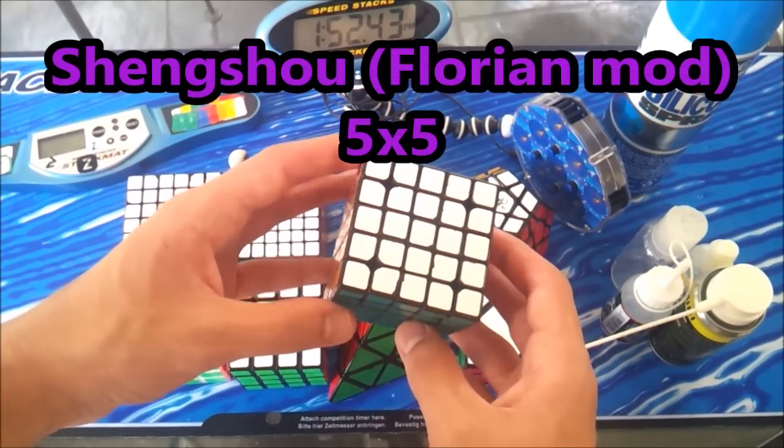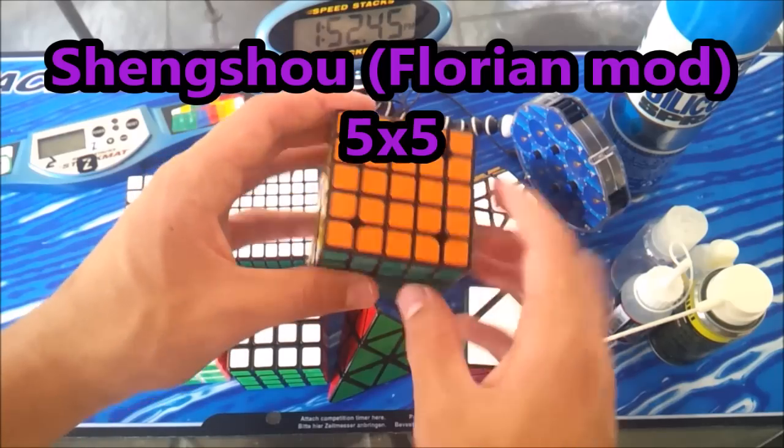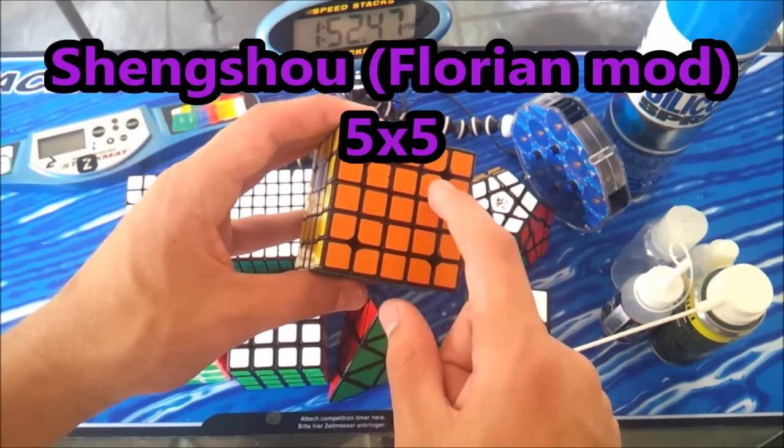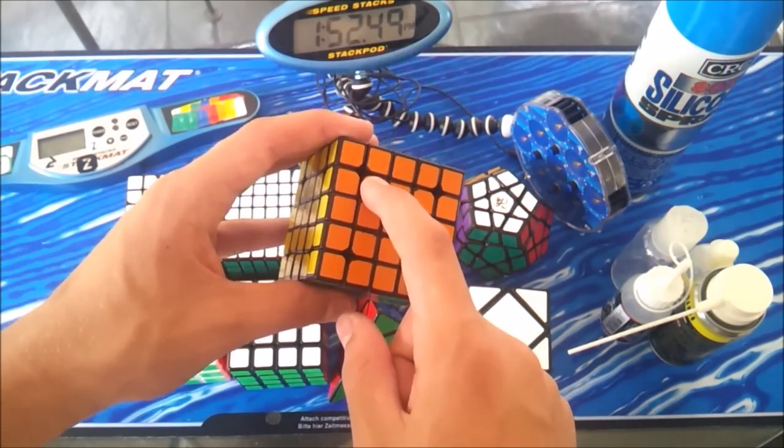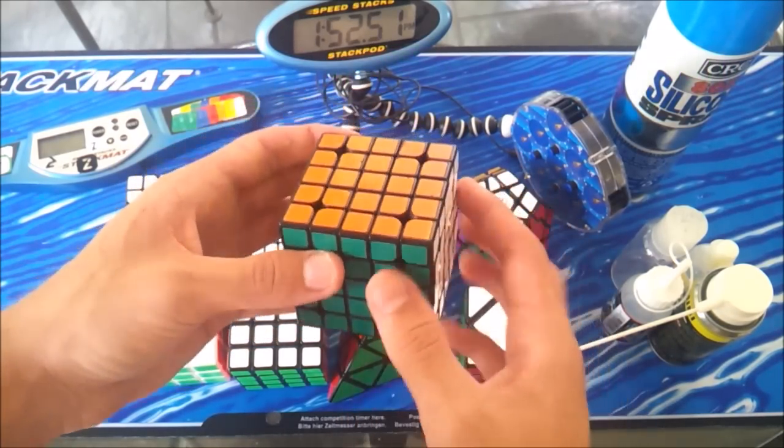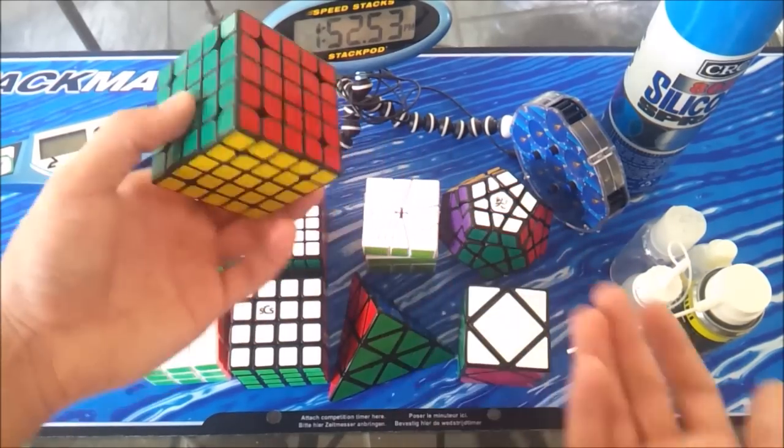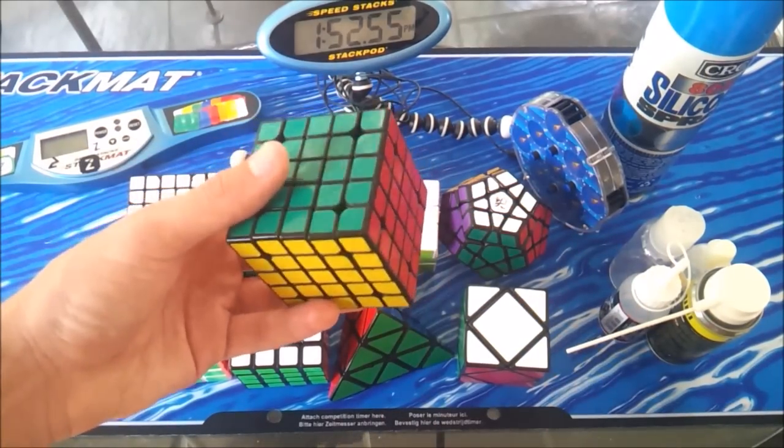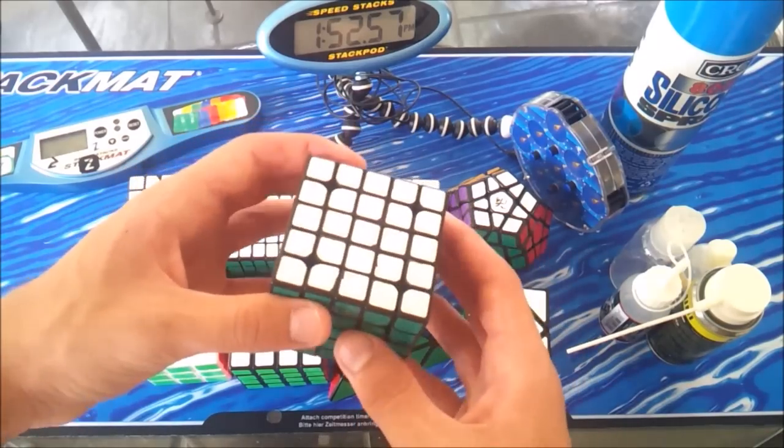For five by five, I've got a Shengshou five by five and hope you guys will be able to tell that this five by five is actually Florian modded. My friend Florian Crecy actually modified this cube himself. So I bought that one off him, and it's got the standard stickers.